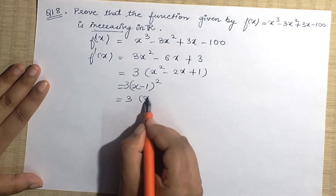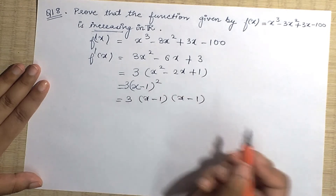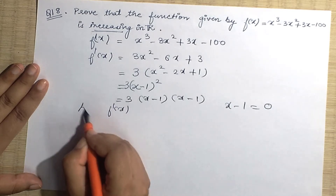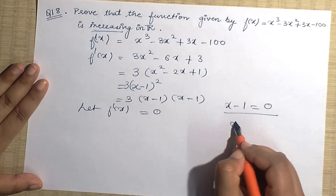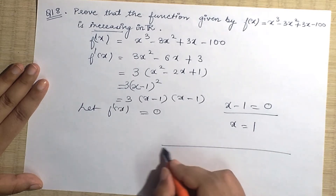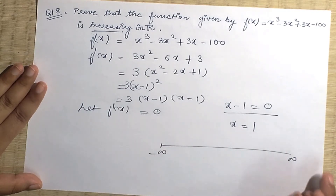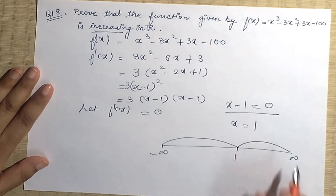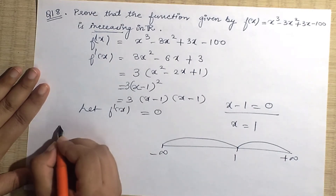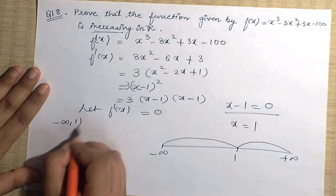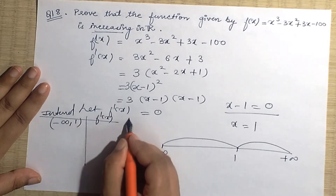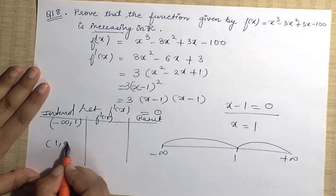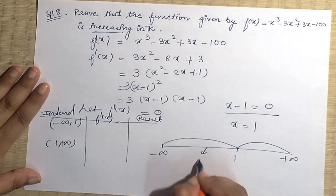After factorization: 3(x - 1)², which is (x-1)(x-1). Setting f'(x) = 0 gives x = 1 as the only critical point. So on the real number line we have one point at x = 1, giving two intervals: (-∞, 1) and (1, +∞). Let's check the sign of f'(x) in each interval.